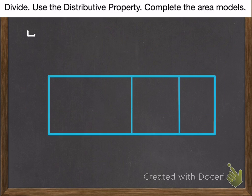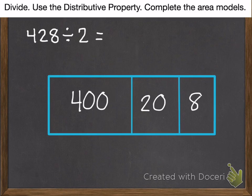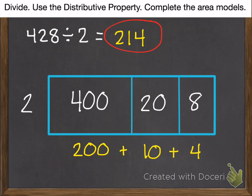So here's your first practice problem. The instructions say to divide and you need to use the distributive property and complete the area models. So go ahead and pause. The area models should look like this: 428, we're dividing it by 2, which gives you 200 plus 10 plus 4. Add those together, you get 214.